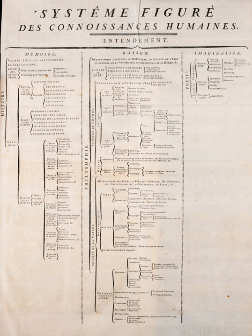The 'figurative system of human knowledge', sometimes known as the Tree of Diderot and D'Alembert, was a tree developed to represent the structure of knowledge itself, produced for the Encyclopédie by Jean-La Ronde D'Alembert and Denis Diderot.